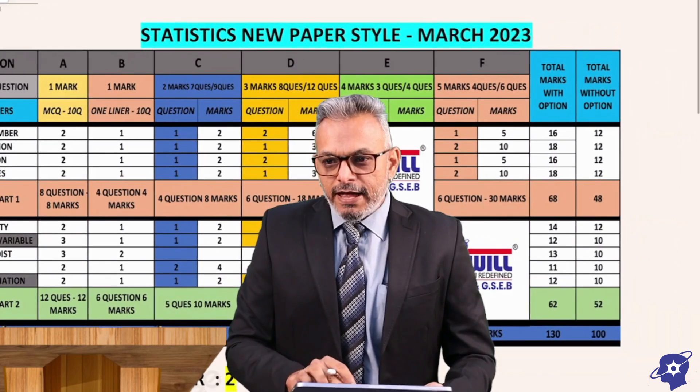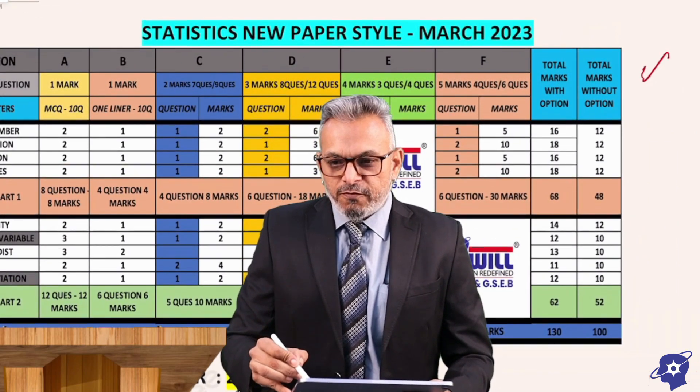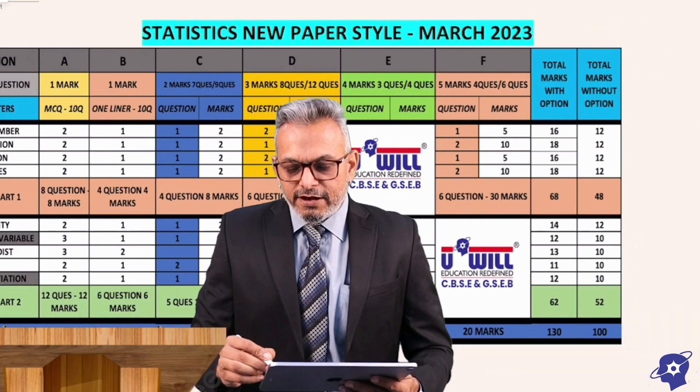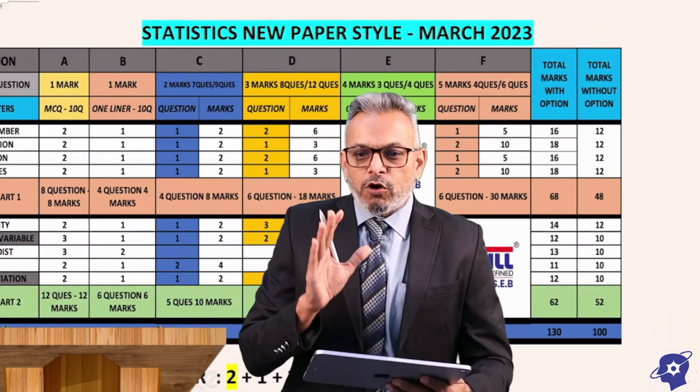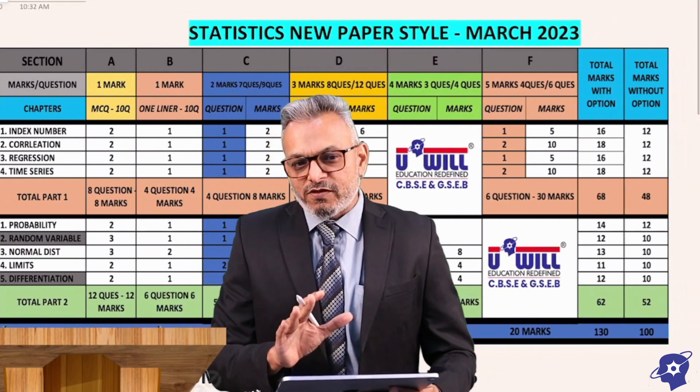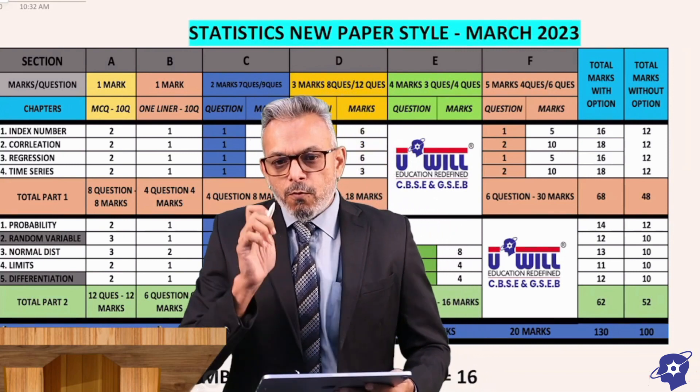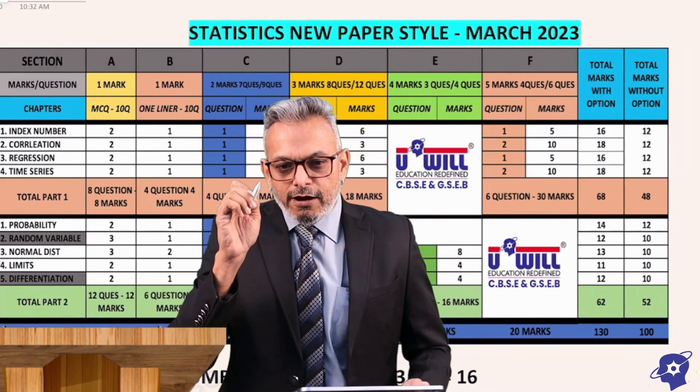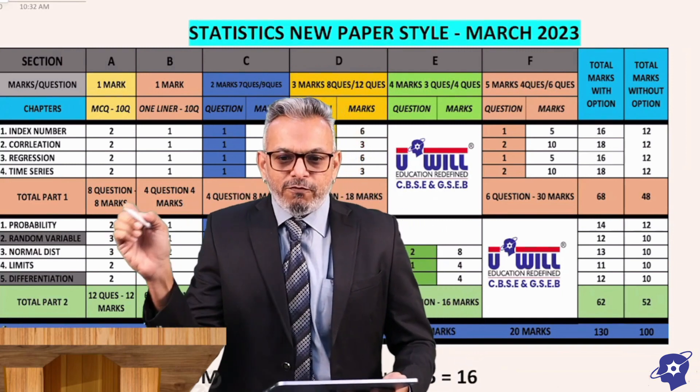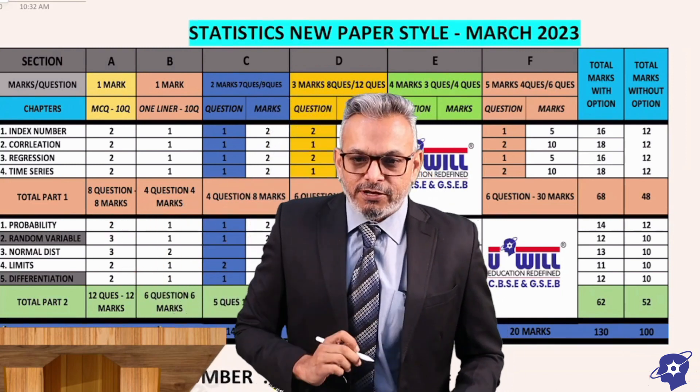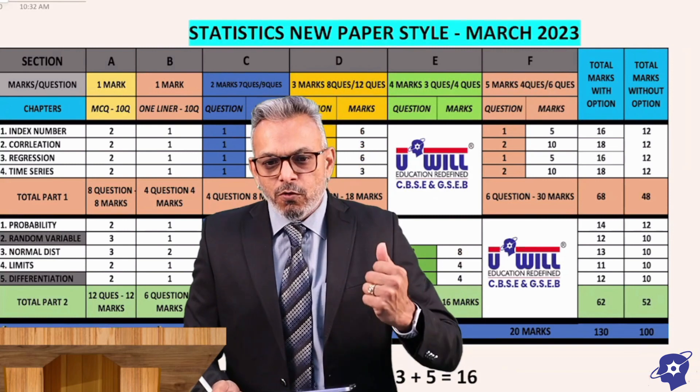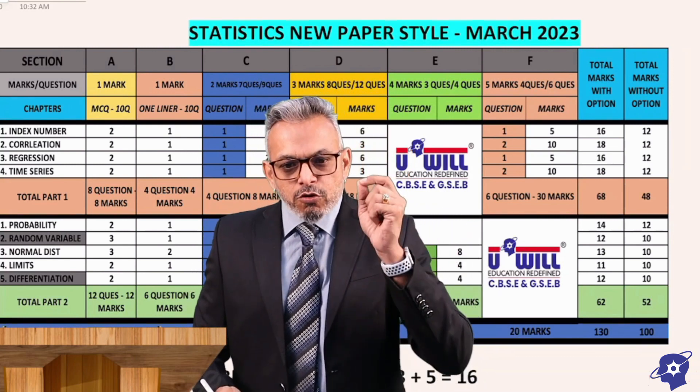You can see over here total marks without option and total marks with option. Without option is like if there was no option, but we are going to see this new paper style which is with option. I would like you all to take a piece of paper and pen and start writing the name of the chapter and the break up of marks for that particular chapter.